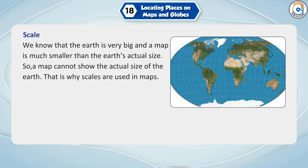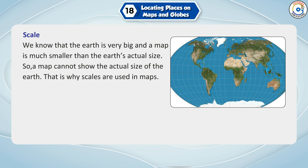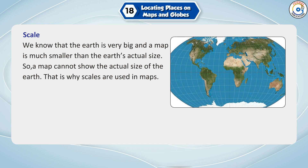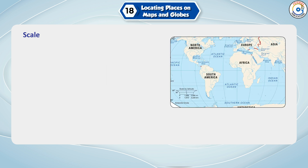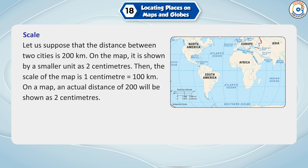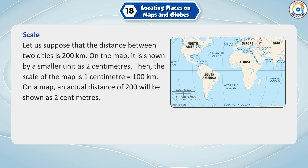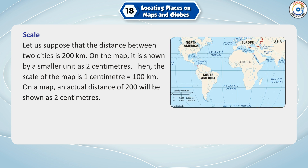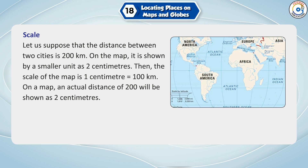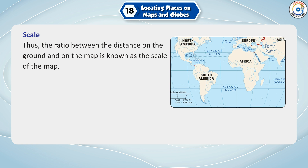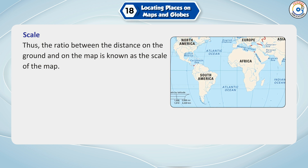Scale: The earth is very big and a map is much smaller than the earth's actual size, so a map cannot show the actual size of the earth. That is why scales are used in maps. For example, if the distance between two cities is 200 km, it is shown on the map as 2 cm. Then the scale of the map is 1 cm equal to 100 km. The ratio between the distance on the ground and on the map is known as the scale of the map.